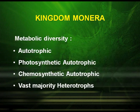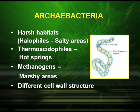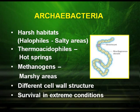They have metabolic diversity. They may be autotrophic — photosynthetic autotrophic as well as chemosynthetic autotrophic — and a vast majority are heterotrophs. Kingdom Monera includes Archaebacteria and Eubacteria. Archaebacteria are found in harsh habitats; they are halophiles found in salty areas, thermoacidophiles found in hot springs, and methanogens in marshy areas. They have a different cell wall structure which helps their survival in extreme conditions.